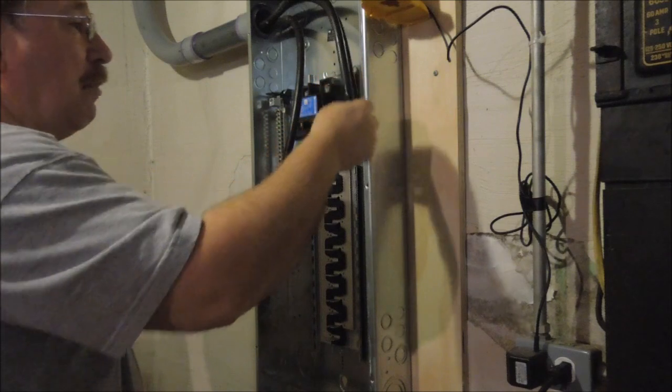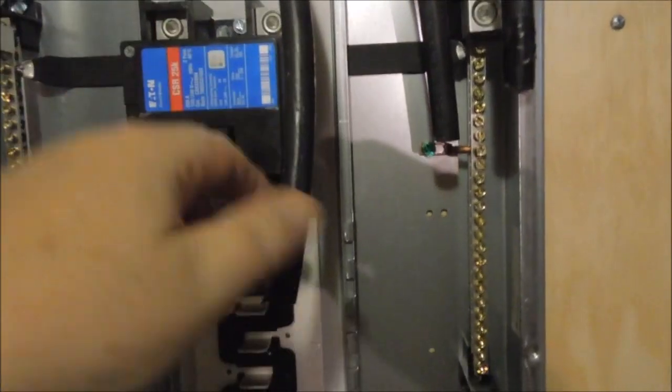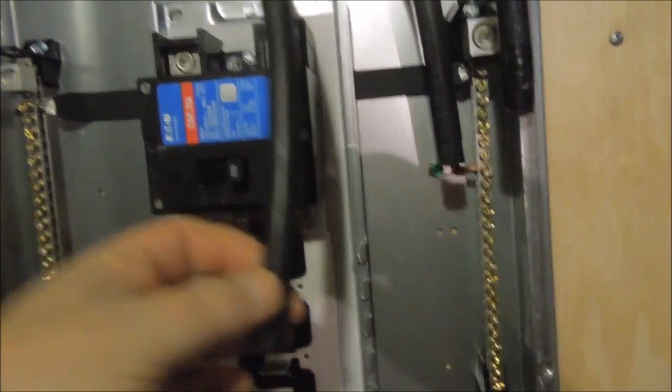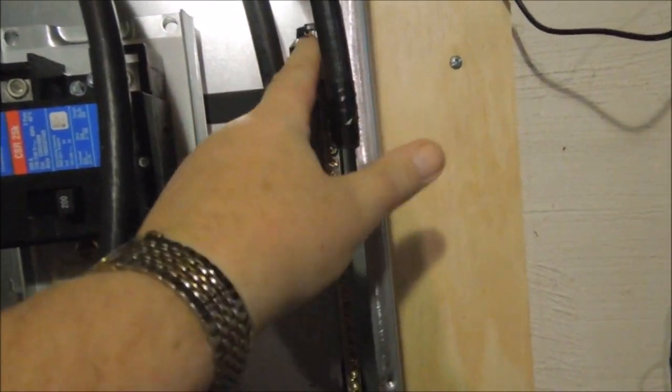This is the neutral wire. I'm going to trim that back, and these wires get trimmed back and they go into the top of the main breaker. Doesn't matter which one - probably put this one in the left one, that one in the right one. The only one I have to be sure of is that the neutral goes to the ground bar.